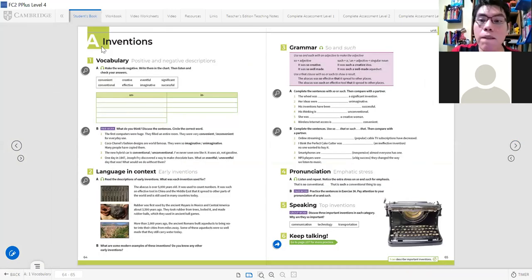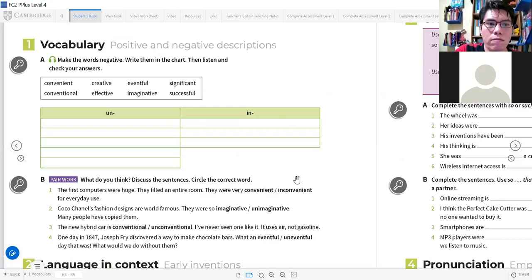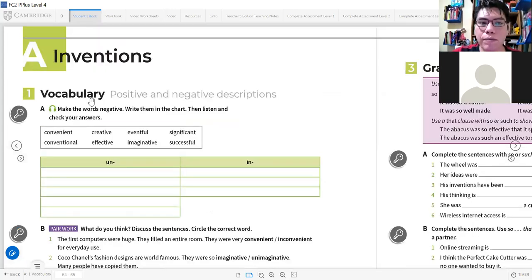Lesson A. Inventions. Inventions. Inventos. Inventions. Vocabulary. Positive and negative descriptions. Descripciones positivas y negativas. So here we have some adjectives. And we are going to create the negative form.